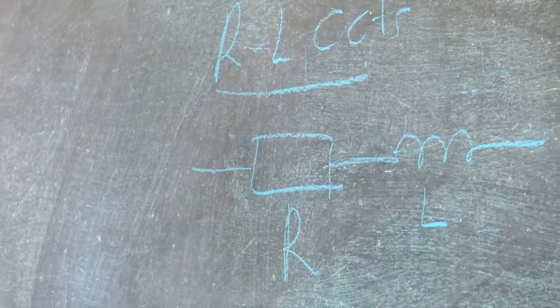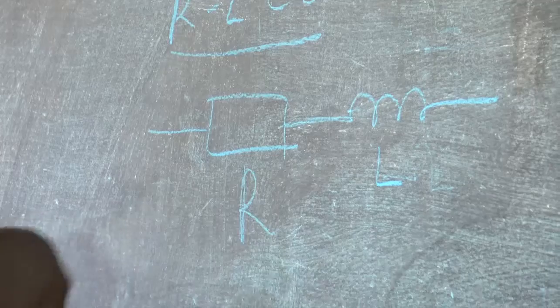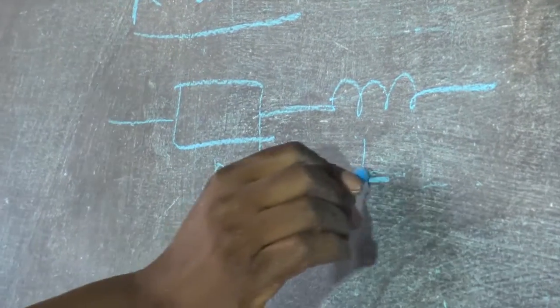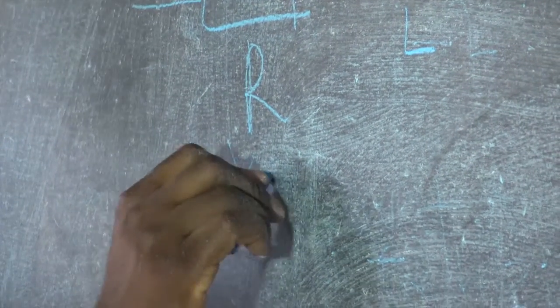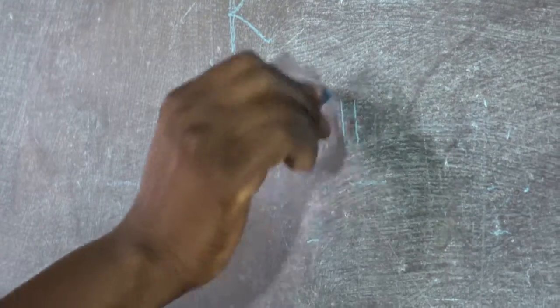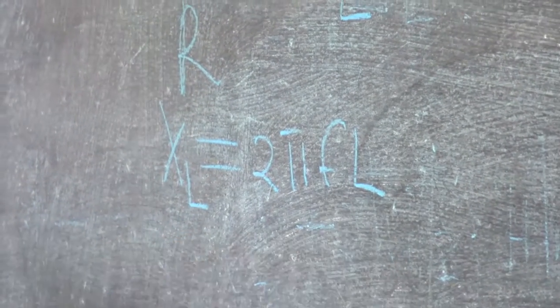This is the inductor. And we say that for you to combine this and this, you have to change this inductance to what we call XL. XL is the inductive reactance, and we said it is given by 2 pi FL. L is the inductance.